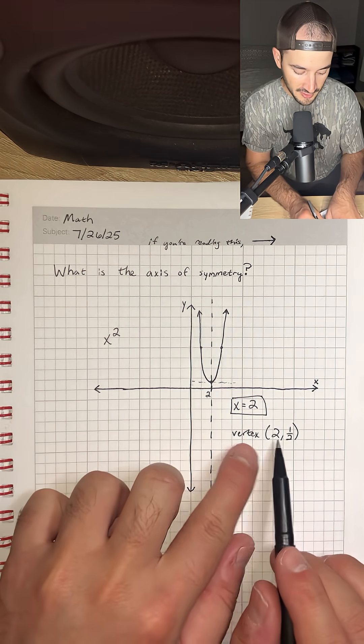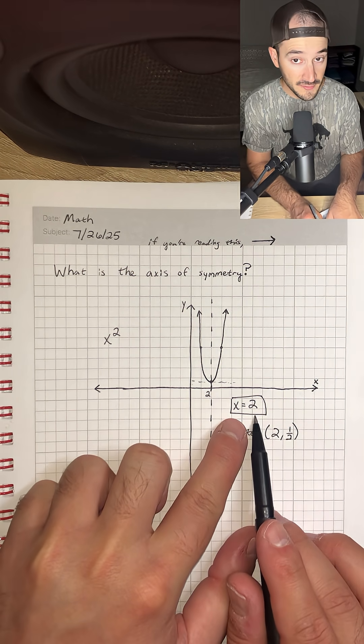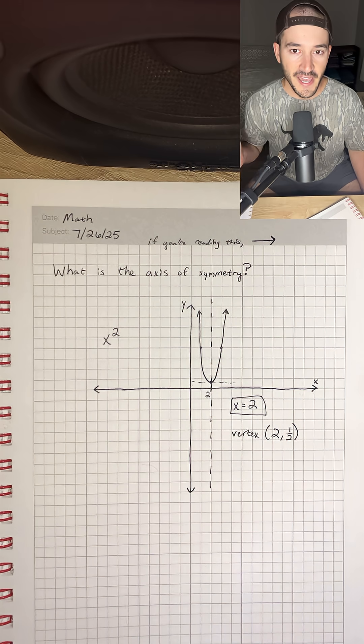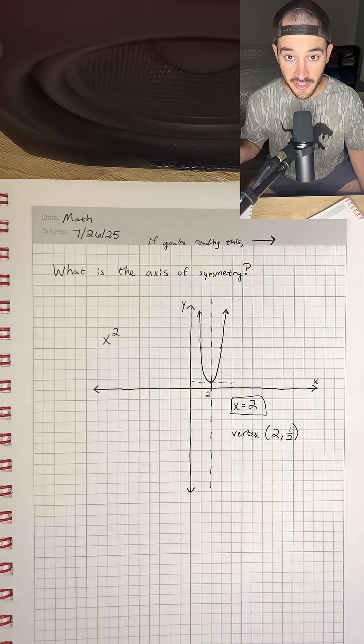So notice that the vertex and our equation for the axis of symmetry both have an x value of 2. So that's just a pattern that you'll pick up on as you learn more algebra.